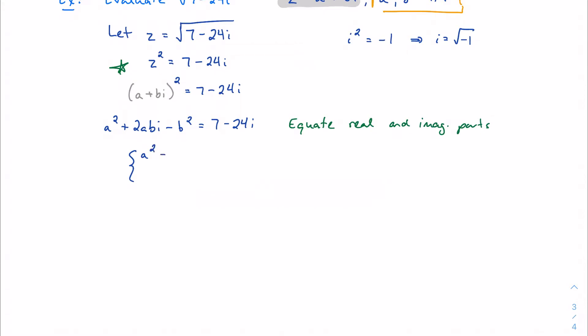a squared minus b squared equals 7. And if 2ab i is equal to negative 24i, then I don't really need the i's at all. Then 2ab must be equal to negative 24.